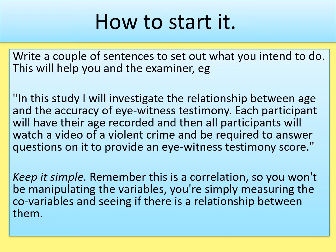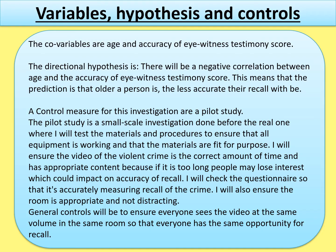Keep it simple — this is a correlation, so there is no IV and DV. You are not manipulating any variables; you are simply measuring the co-variables. Those couple of sentences help set out what you intend to do. Your first subheading from the bullets is: variables, directional hypothesis and controls. The variables are co-variables because it's a correlation — in this case, age and accuracy of eyewitness testimony score.